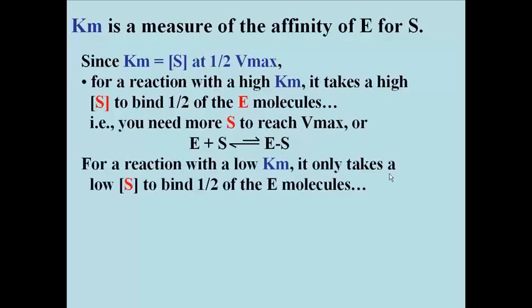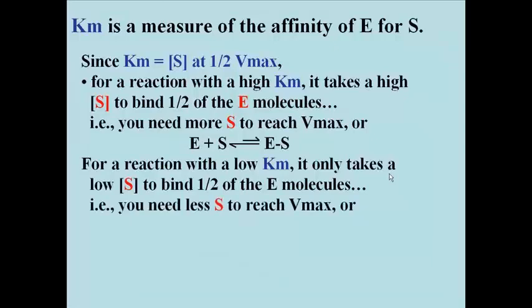What about a reaction with a low Km? It means that it only takes a low substrate concentration, does not take many substrate molecules, to bind half of the enzyme molecules. In other words, you need less substrate for this reaction to reach Vmax. The formation of the enzyme-substrate complex is perhaps more favorable for a reaction with a very low Km.